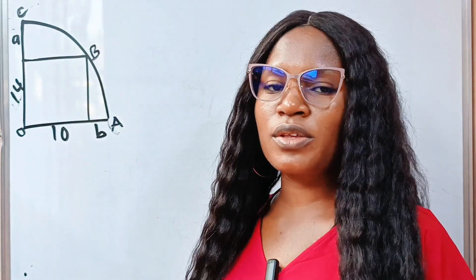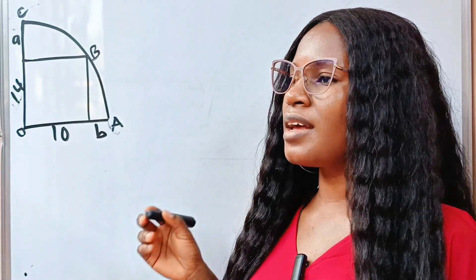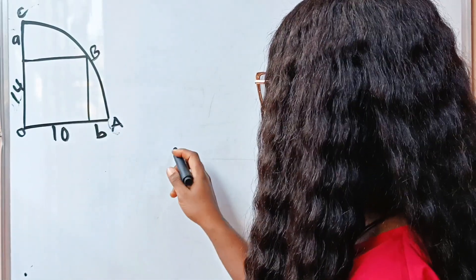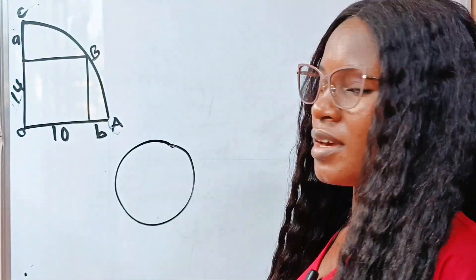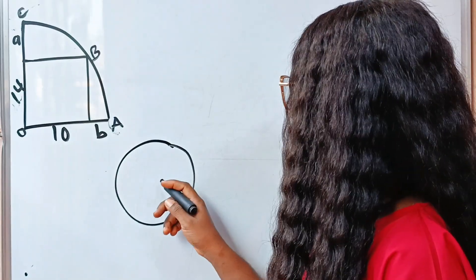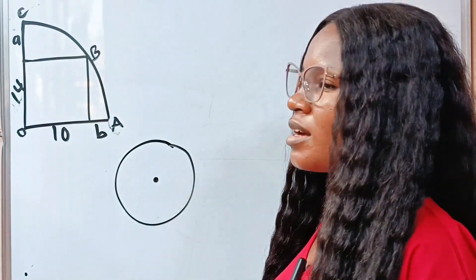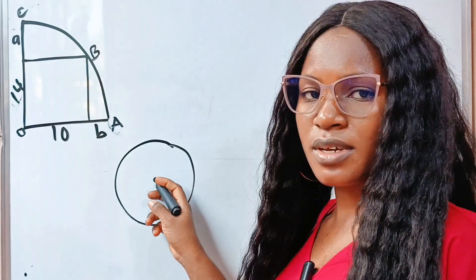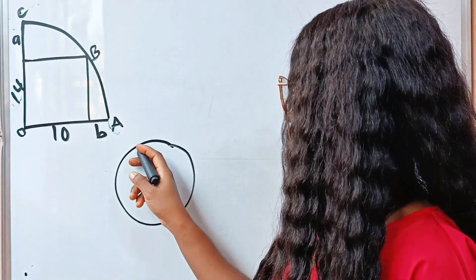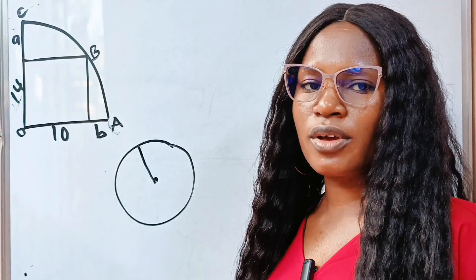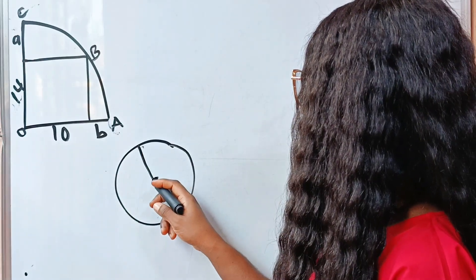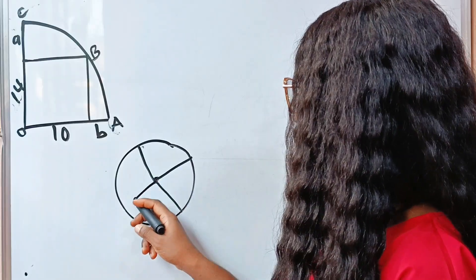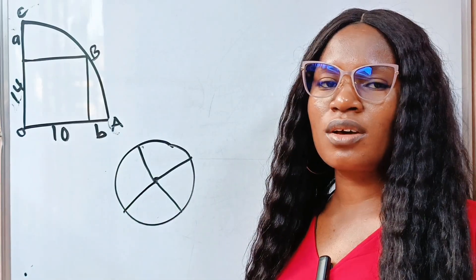Remember that the radius of a circle is any line drawn from the center of the circle to its circumference. If this is a circle and this is the center, any line drawn from the center to the circumference is the radius. So from here to here is the radius, this is the radius, this is the radius, this is the radius, and so on and so forth.